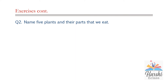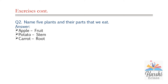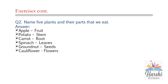Second question: Name five plants and their parts that we eat. Apple — apple is a fruit. Potato — potato is a stem. Carrot is a root. Spinach — we are eating the leaves of this plant as food. Groundnut seeds are used as a food item. Cauliflower is the flower of the plant.